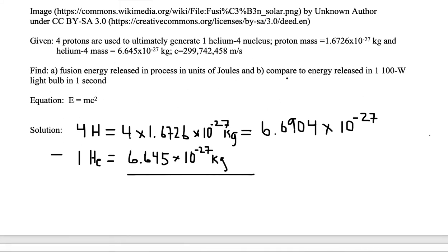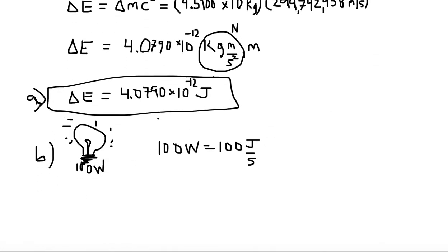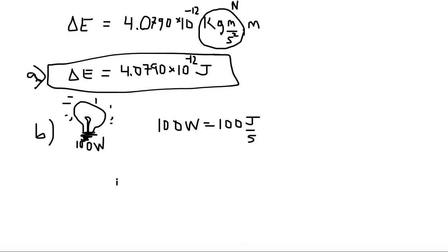Because one watt is one joule emitted or absorbed in one second. In this case, we're emitting it because it's a light bulb. We want to compare the energy released in one 100-watt light bulb in one second. So our time constant is one second. So delta E, in this case, is equal to 100 joules per second multiplied by one second, which is just going to give us 100 joules.